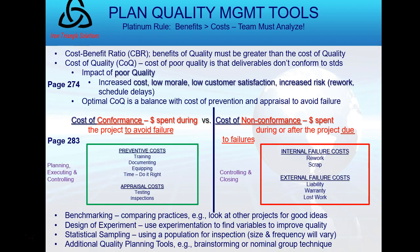Coming back to Plan Quality Management tools — here's the platinum rule: benefits must exceed cost. The team has to analyze: yes, quality will save money in the long run, but you can't over-add quality. There is a balance, and the benefits must exceed the cost when doing quality.